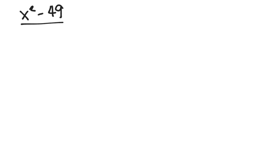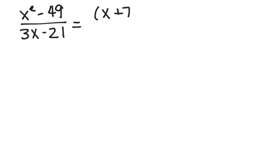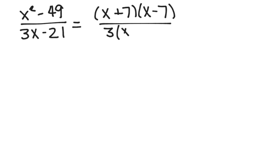For example, let's say I have x squared minus 49 divided by 3x minus 21. Like when we multiplied or divided, we want to actually go ahead and factor. x squared minus 49 factors into x plus 7 times x minus 7. 3x minus 21 factors as 3 times the quantity x minus 7, because 3 goes into both 3 and 21.